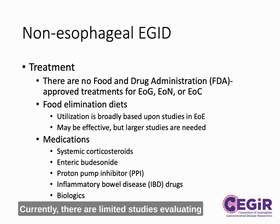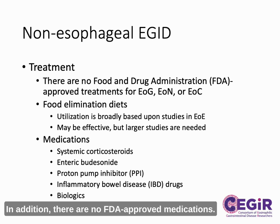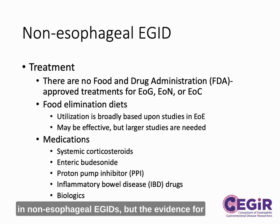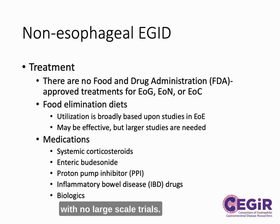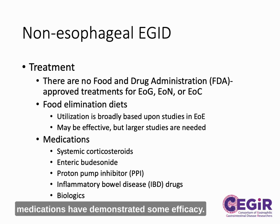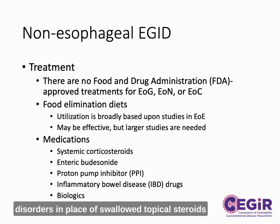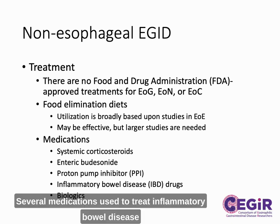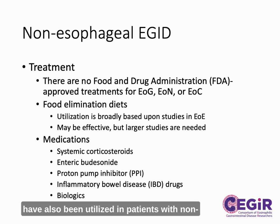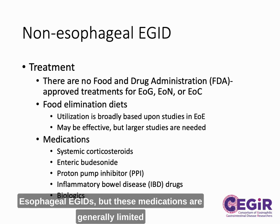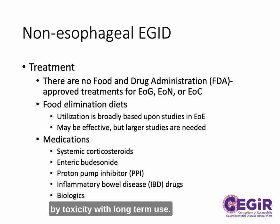Currently, there are limited studies evaluating effective treatments for non-esophageal eGIDS. In addition, there are no FDA-approved medications. Treatments utilized for EOE have also been evaluated in non-esophageal eGIDS, but the evidence for efficacy is limited to single centers or case series with no large-scale trials. Both food elimination diets and medications have demonstrated some efficacy. Enteric-coated budesonide can be used for several disorders in place of swallowed topical steroids that cannot penetrate the lower GI tract. Several medications used to treat inflammatory bowel disease have also been utilized in patients with non-esophageal eGIDS, but these medications are generally limited by toxicity with long-term use.